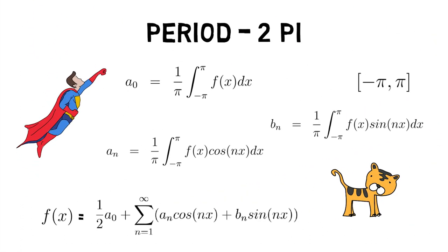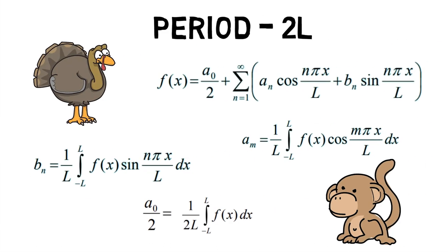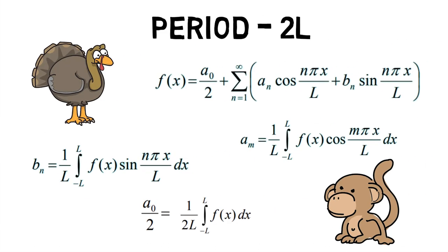Hence, we first saw what Fourier series with period 2π are and then went on to see what Fourier series of period 2L is.